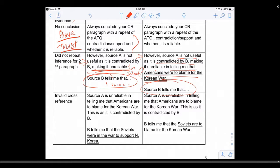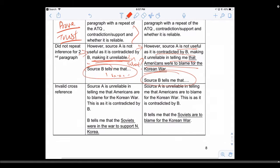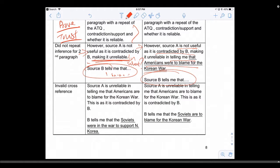Keep your criteria the same - your inference is different, your criteria must be the same. Invalid cross-reference: what does it mean? It means that when you make an inference, your criteria is not the same. Example: 'A is unreliable, it tells me Americans are to blame.' So your topic here is who is to blame for the Korean War.